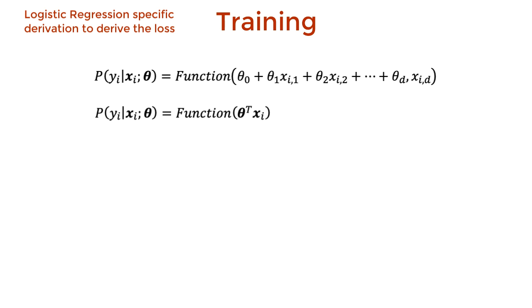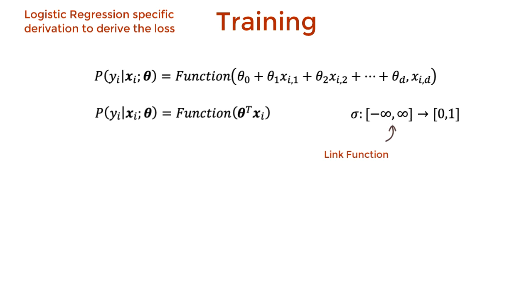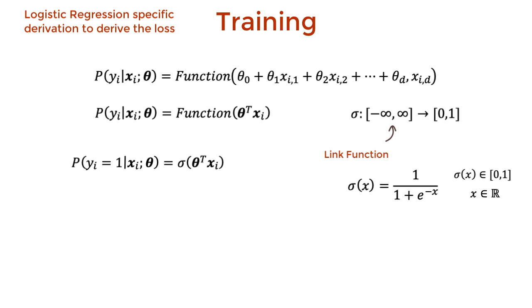This linear combination of weights and features — that is the theta transpose x_i — can be any real number. But the output has to be a probability value that lies between 0 and 1. So the function needs to map a real number to a probability value between 0 and 1. Generalized linear models use link functions to do this. Logistic regression specifically uses the sigmoid function as its link function. For the one-dimensional case, sigma of x represents a probability value and hence lies between 0 and 1. In logistic regression, we assume the distribution of training labels is approximated using the sigmoid function.